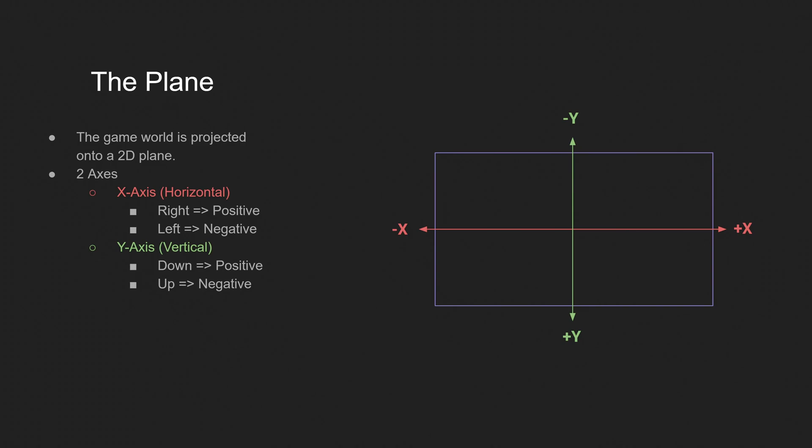So moving on. The plane. So what is the plane? You can think of a 2D game as just being projected onto a flat plane. Just like the screen that you're watching this video on. It's flat. It has a width. It has a height. But it doesn't have any depth. So a plane in a 2D game is constrained to two axes. The x-axis and the y-axis. The x-axis is the horizontal axis represented by the red line. And the y-axis is the vertical axis and that's represented here in green.